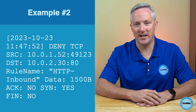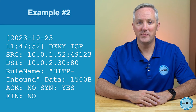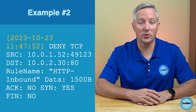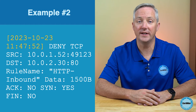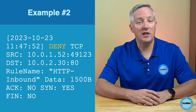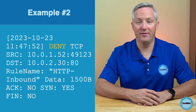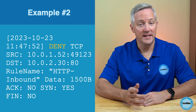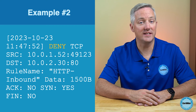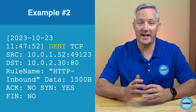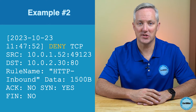Let's try another one. Here's a second log entry. First, the timestamp tells us that the event occurred on October 23rd, 2023, at 11:47 and 52 seconds. The keyword "deny" follows, indicating the outcome of this firewall rule processing. In this instance, the traffic or data packet did not meet the conditions set to permit traffic by the firewall's rules, and the firewall denied that traffic — it did not allow it to pass through.